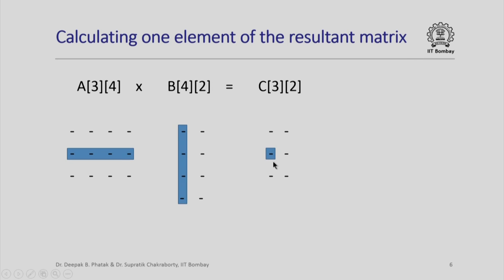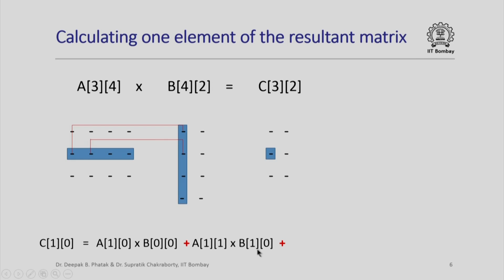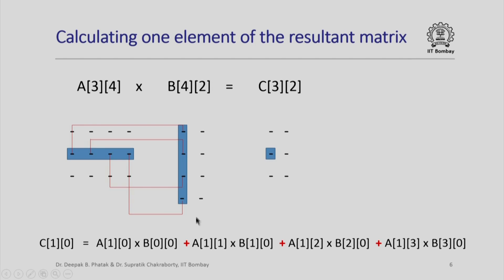How do we obtain this? You take A[1][0] multiplied by B[0][0], then add A[1][1] multiplied by B[1][0], and finally A[1][3] multiplied by B[3][0]. In short, C[1][0] is the sum of this element times this, this element times this, this element times this, and so on. This we will have to do for each and every element of C.